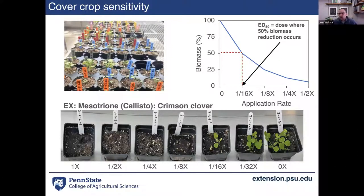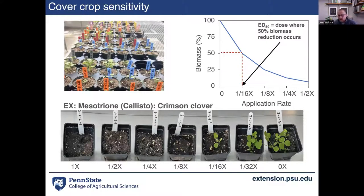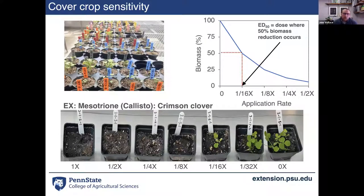Some of the work at Penn State uses greenhouse experiments to understand how cover crop species differ in sensitivity to corn or soybean herbicides. For example, looking at crimson clover sensitivity to callisto (mesotrione): applying different doses from a 1x field rate down to very low rates, even down to about one-eighth of the active ingredient, we still got 100% injury of crimson clover, suggesting crimson clover is highly sensitive to callisto.